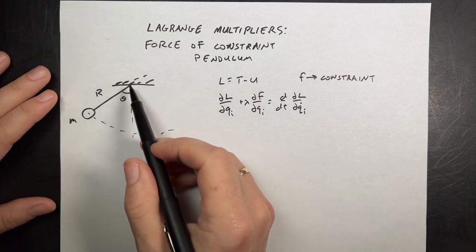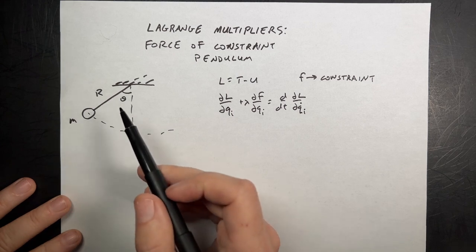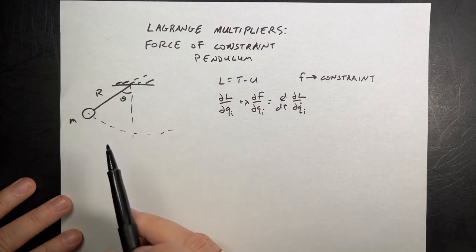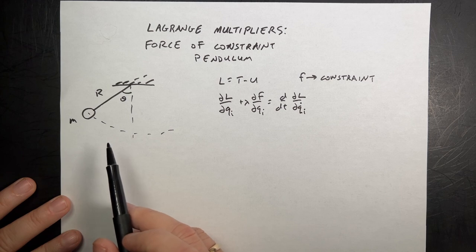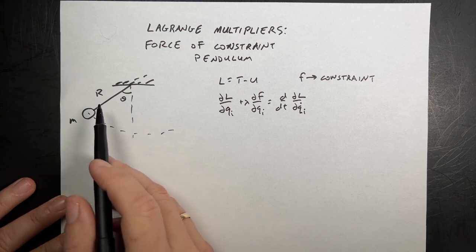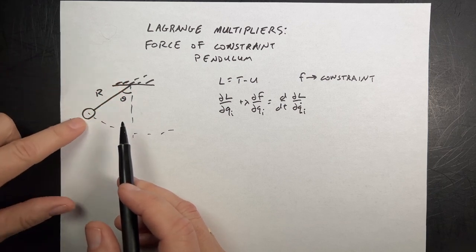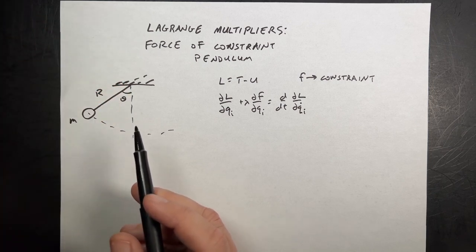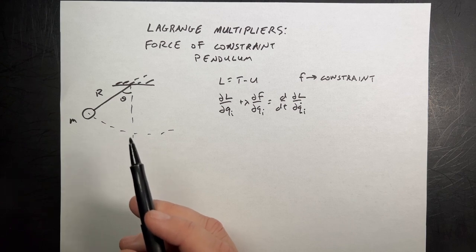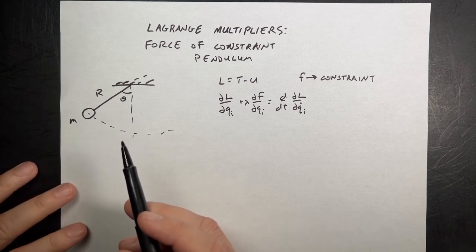So here's a pendulum. We've seen that many times, and we want to find not just the equation of motion — which isn't trivial, people like to think it's trivial, but it's not — we want to find the force of constraint. In this case, it would be the tension in the string. What's the tension in the string? It's not constant. So for this, we're going to use Lagrange multipliers.